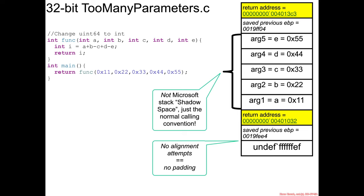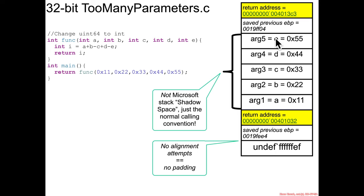Your stack diagram should look something like this. You have your typical return address of whoever called main, and then the very first thing you see inside of main is a push EBP. So whatever the EBP register was pointing at gets pushed onto the stack. Then you start seeing your parameters for the call to func being pushed on the stack from right to left — push 55, push 44, push 33, and so forth. That's to make them take this ordering.